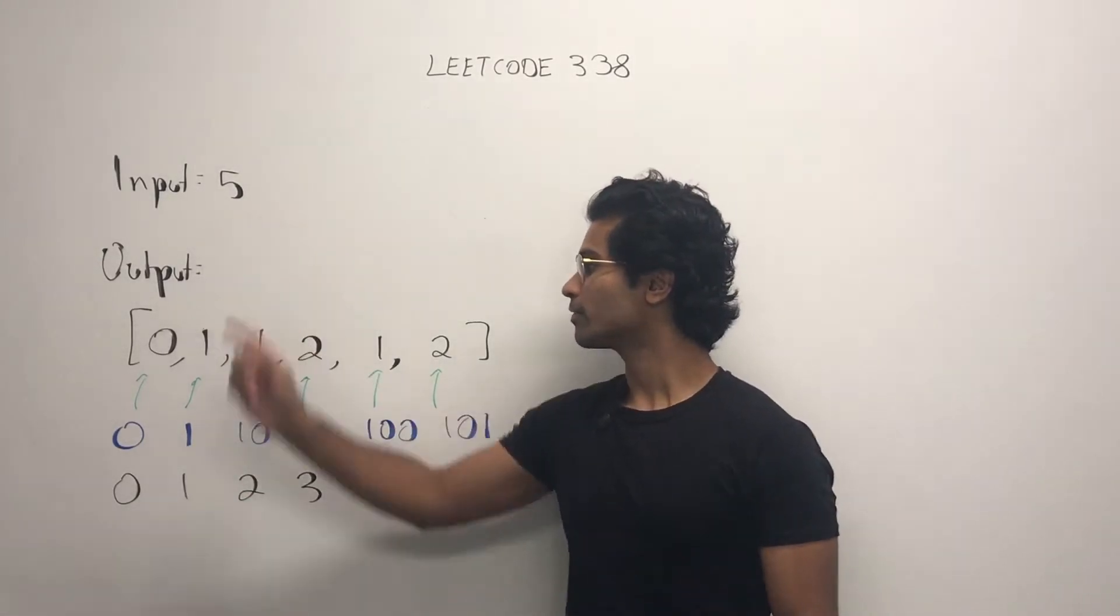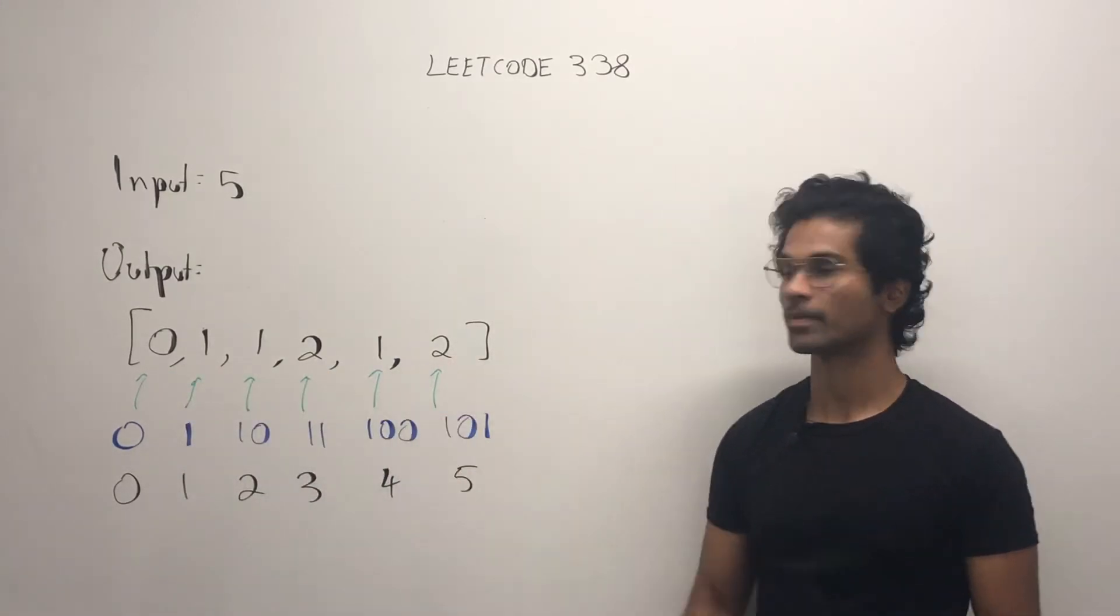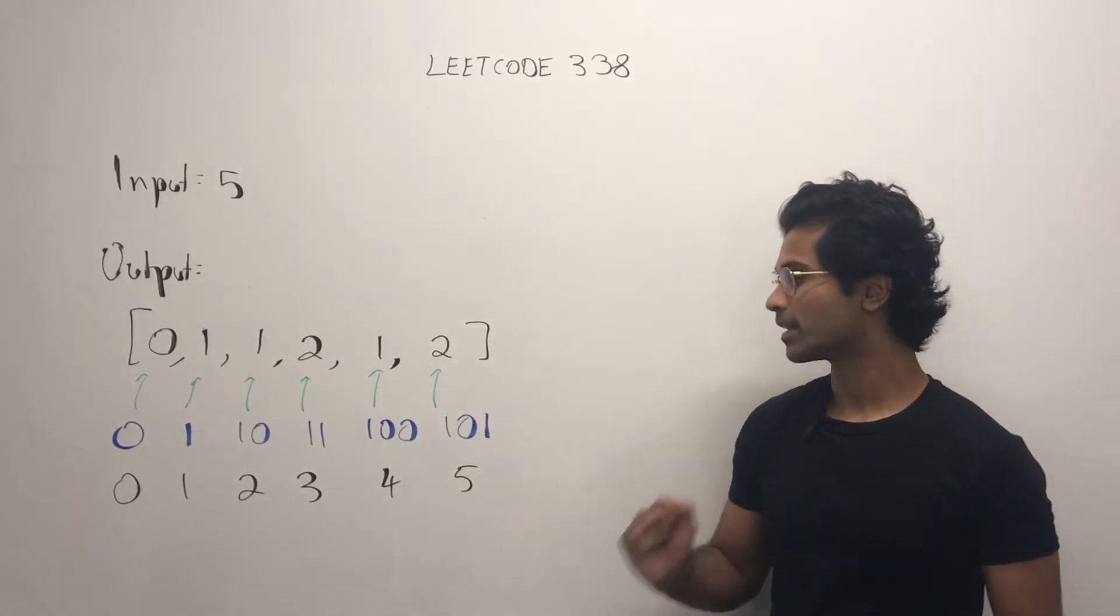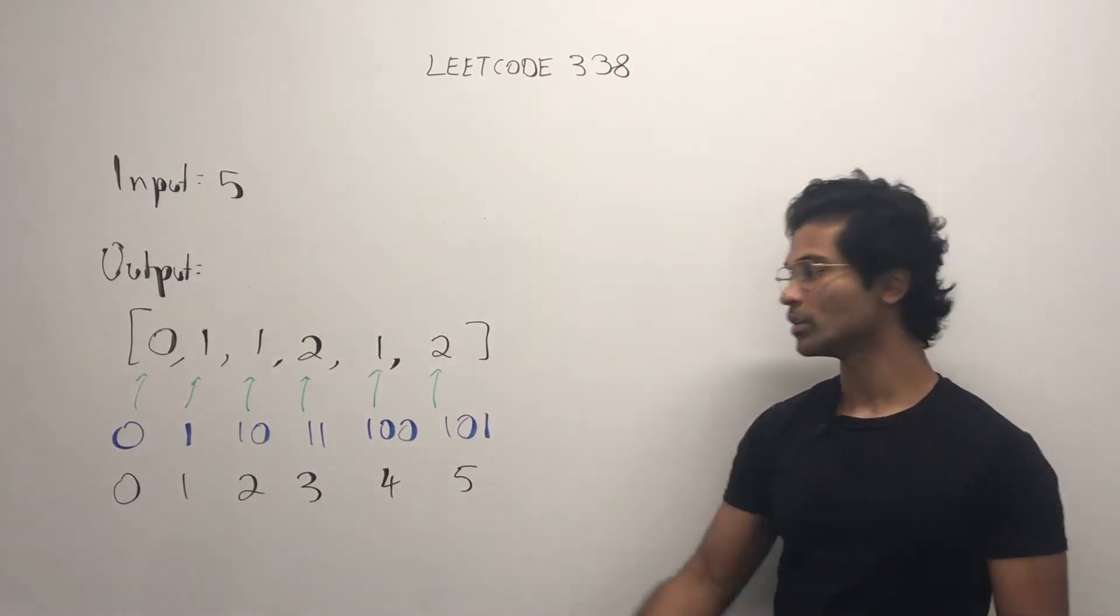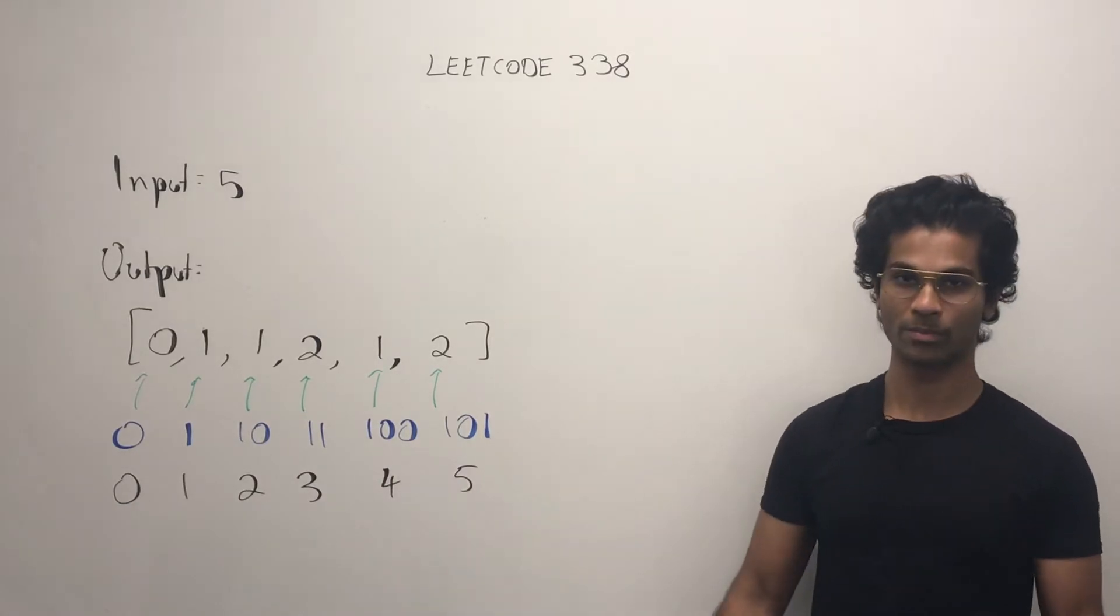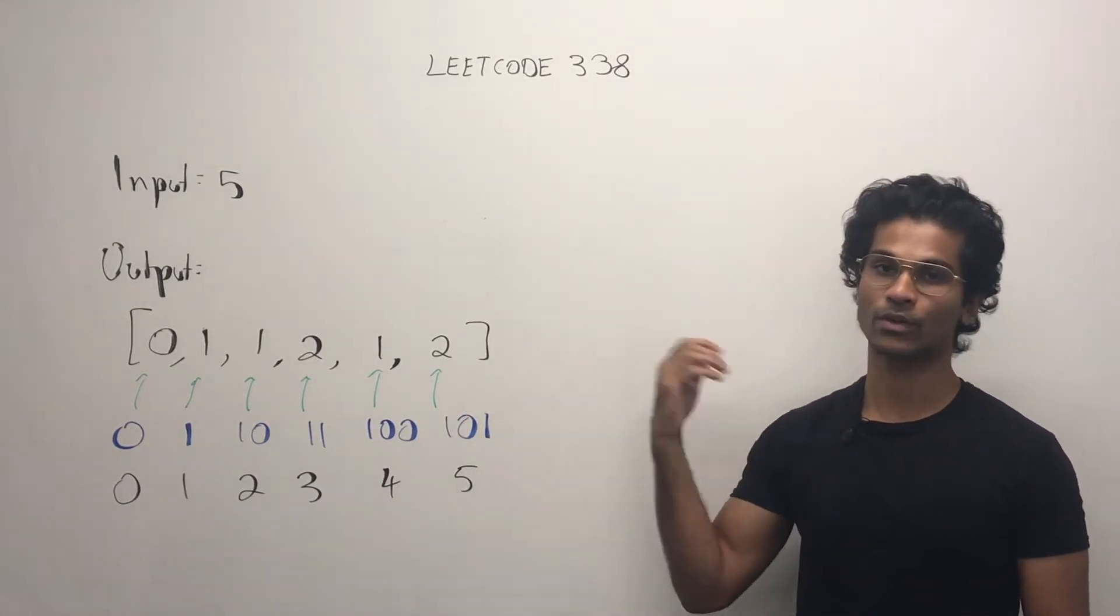So we have 5 and the output is going to be 0, 1, 1, 2, 1, 2, 2. All they're asking is if we go from 0 to the input n, what are the number of bits in each of the number for binary representation? Count those bits and put them in an array and return that array.